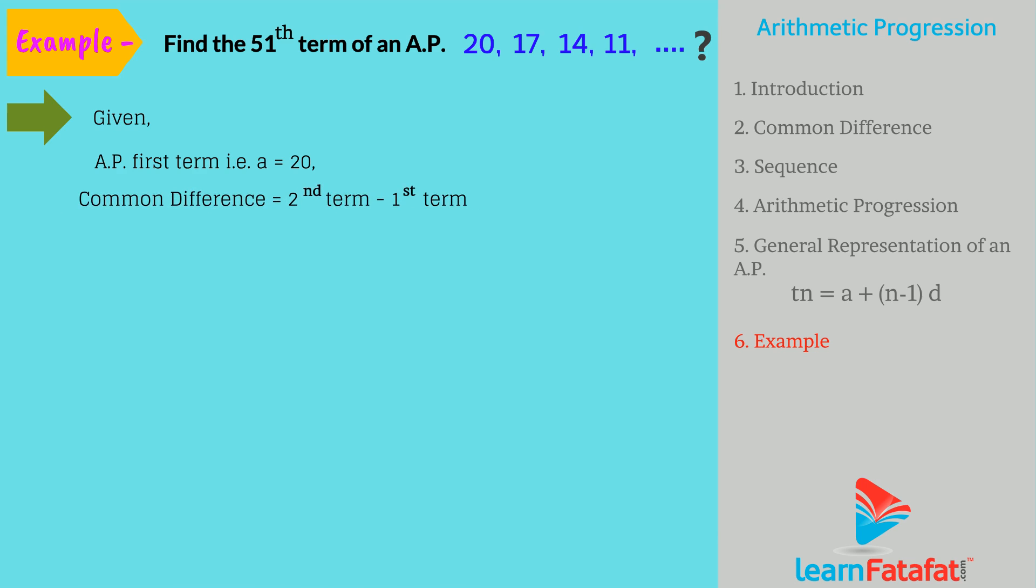The common difference is 2nd term minus 1st term, that is D is equal to 17 minus 20, which is equal to minus 3.